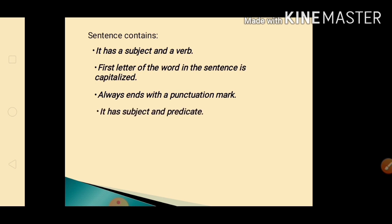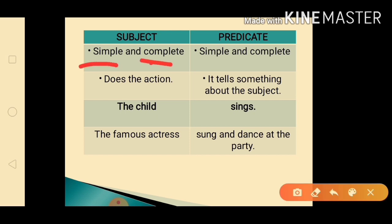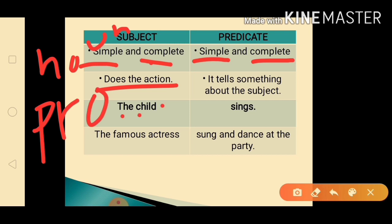And sentence consists of subject and predicate. Kapag sinabi nating subject, it has simple and complete subject. Kapag sinabi nating predicate, meron siyang simple and complete predicate as well. So, here it is. Kapag sinabi nating subject, subject does the action. Meaning to say, siya yung gumagawa ng kilos. And usually, ang subject natin ay noun or pronoun. Yan ang subject natin. Noun or pronoun.